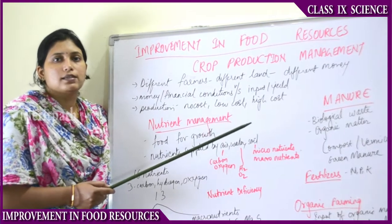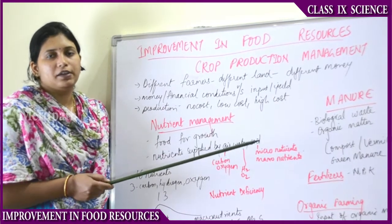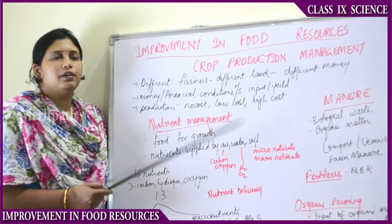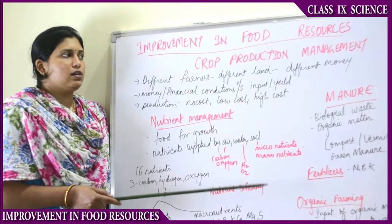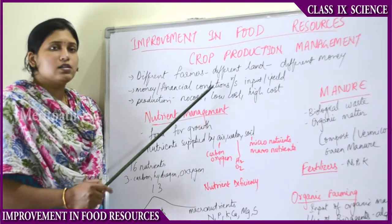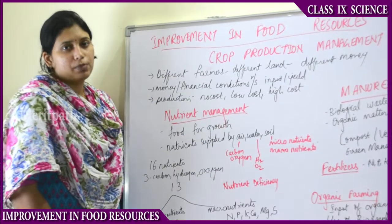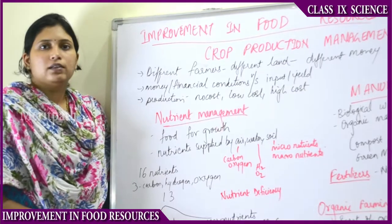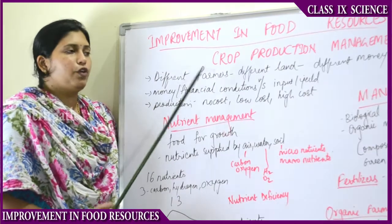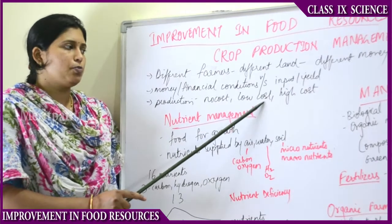Some farmers have less acres of land and less money; some have more acres and more money. It is money and financial conditions that decide the input or yield of the crop. If farmers have more money, they apply more scientific management techniques and technology; if they have less money, they cannot use new scientific methods or buy more fertilizers. There are three types of production: no cost production, low cost production, and high cost production.